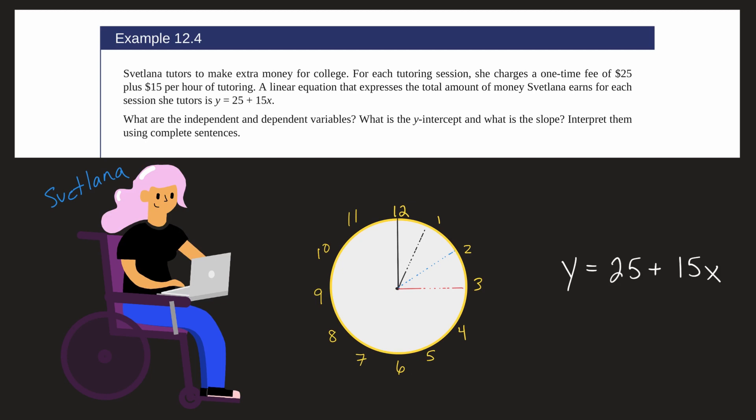So this asks us, what are the independent and the dependent variables? What is the y-intercept? And what is the slope? And then we'll interpret those in sort of plain English.